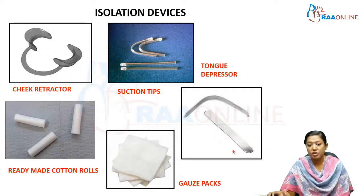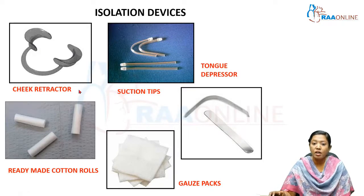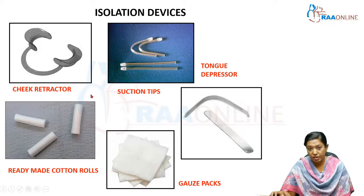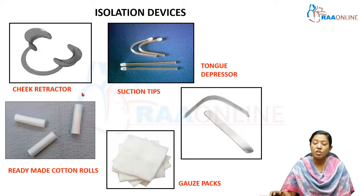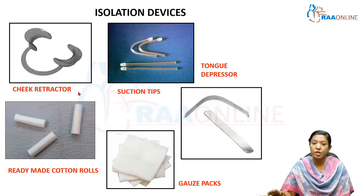Coming to the general isolation devices — the cheek retractor. When rubber dam isolation is not possible, for example when doing a composite cavity such as a Class 3 or Class 4 composite on anterior teeth, or restoring a cervical abrasion lesion with GIC, you can use a cheek retractor to retract the cheeks and buccal mucosa away from the operating site.